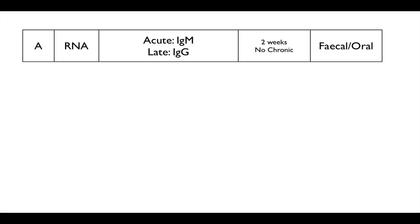Going through the hepatitis viruses: Hepatitis A is an RNA virus — it is acute, with an IgM component early and a late IgG component. The incubation period is short, about 2 weeks. There is no chronic problem with it and the route is fecal-oral, so it classically affects people eating shellfish near a contaminated water source, leading to rapid onset self-limiting hepatitis.